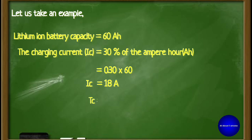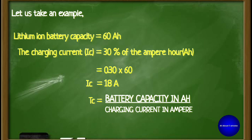Tc, the time required for full charge, equals the ratio between battery capacity in ampere-hours and charging current in amperes. After substituting the values, we get the charging time required is 3.33 hours.